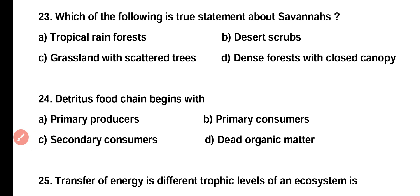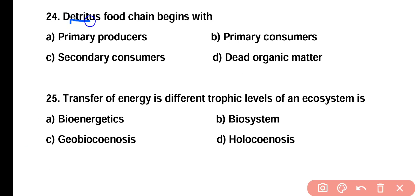Question number twenty-three: which is a true statement about savannas? Tropical rainforests, desert scrubs, grasslands with scattered trees, or dense forest with closed canopy? Correct answer is option C. Savannas are grasslands with scattered trees. Question number twenty-four: the detritus food chain begins with primary producers, primary consumers, secondary consumers, or dead organic matter? Correct answer is option D. The detritus food chain always begins with dead organic matter.